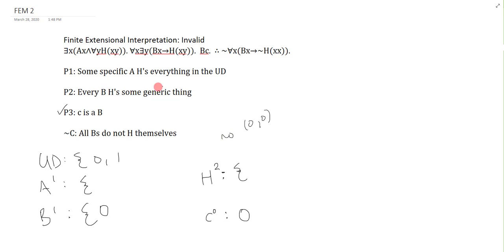So, every B has to H some generic thing. Well, if I can't H 0, 0, then I have to H the other thing in my universe, which is 0, 1. So, so far, that looks good.